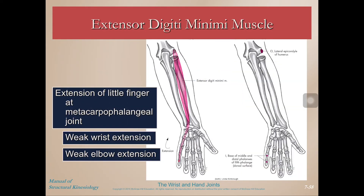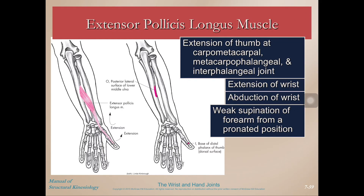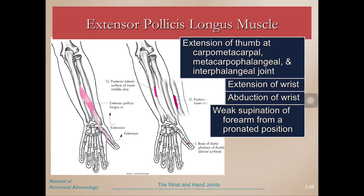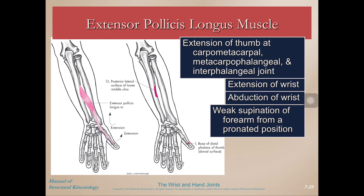Extensor digiti minimi is the extensor of your pinky — every time you sip tea, this is the British tea-sipping muscle. Extensor pollicis longus extends the pollicis, or the thumb, as well as extension of the wrist, abduction of the wrist, and weak supination. If we just remember the line of action of these muscles and imagine them shortening, we can tell whether they will do supination or pronation, because they pull the hand in that direction if anchored on the forearm.